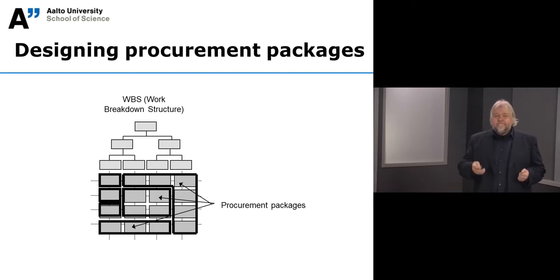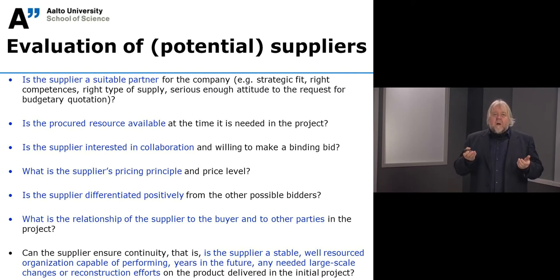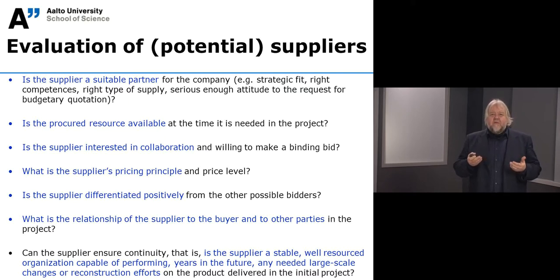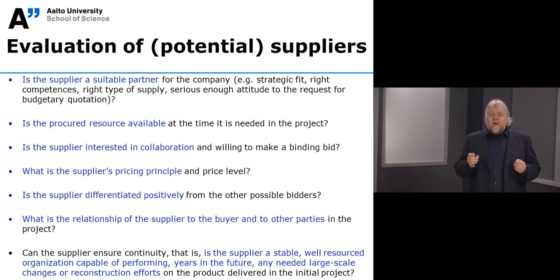This list addresses the buyer's evaluation of potential suppliers. First: is the supplier a suitable partner? Does it have the right competencies? Does the supplier take the selling seriously enough, and is the attitude right — which can be reflected from, for example, the budgetary quotation? The second bullet: is the procured resource available? Does the supplier promise that certain people are available for this project, and does the supplier not take those people to some other customers?